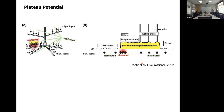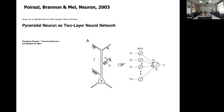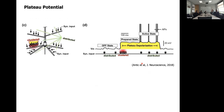That two-layer model is not really accurate — it misses some of the other big properties. One of the big things is this sort of plateau potential.